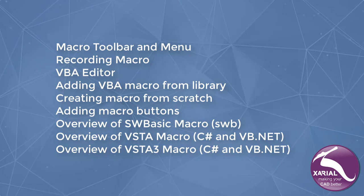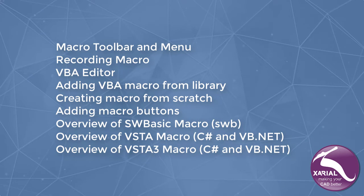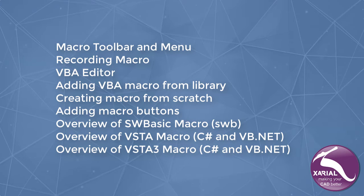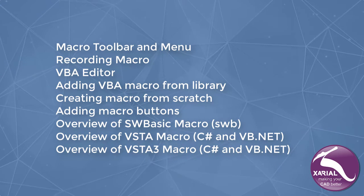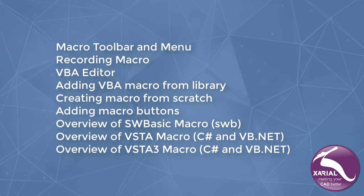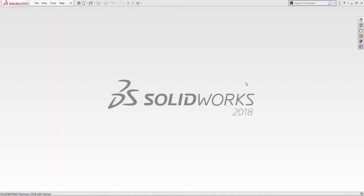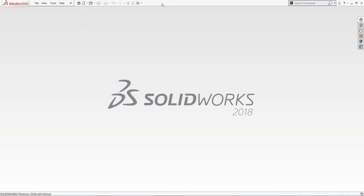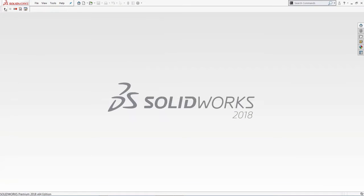This video is a guide for SOLIDWORKS users rather than developers, so if you don't have any macro or programming experience, you may still find this video useful. It will demonstrate how to use a macro from the internet, how to add it to your library and how to run it. The macro menu is available in the Tools menu under the Macro submenu, or in the macro toolbar in SOLIDWORKS toolbars.